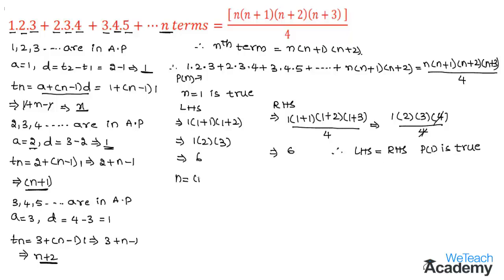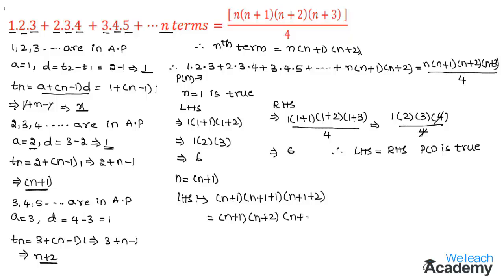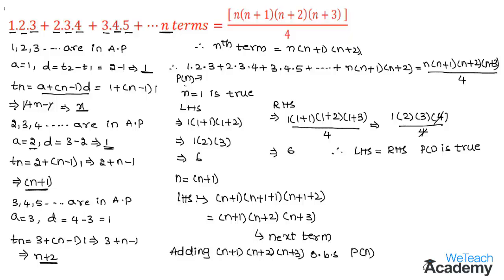Now let us substitute n+1 in the nth term of the LHS. By substituting we get (n+1)(n+1+1)(n+1+2) = (n+1)(n+2)(n+3). This is the next term of the series P(n). Now let us add (n+1)(n+2)(n+3) on both sides of P(n).